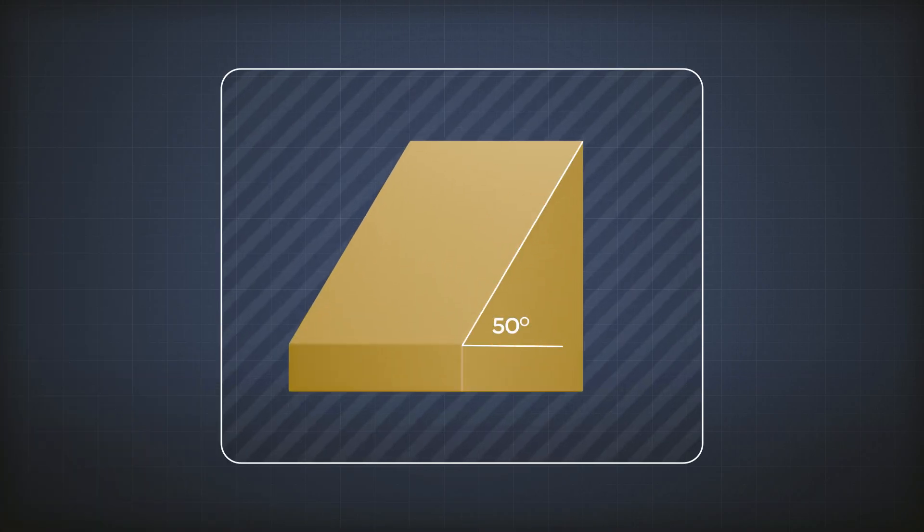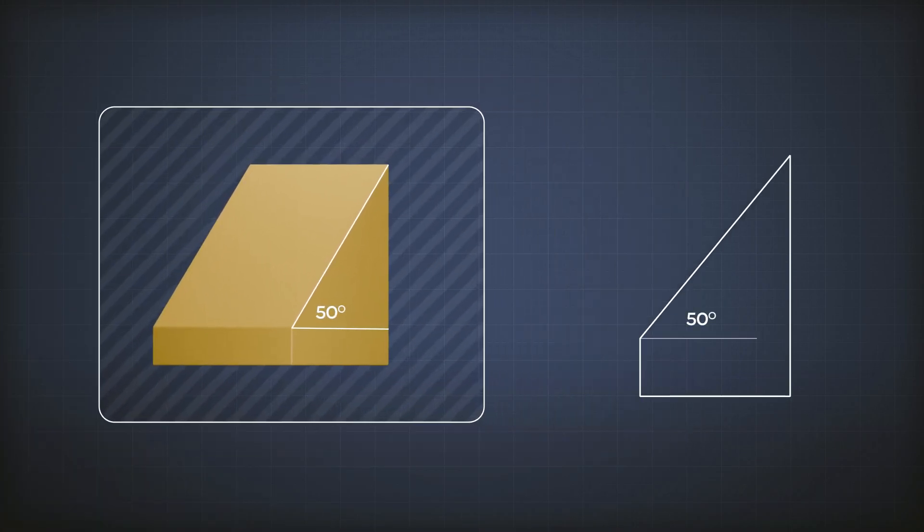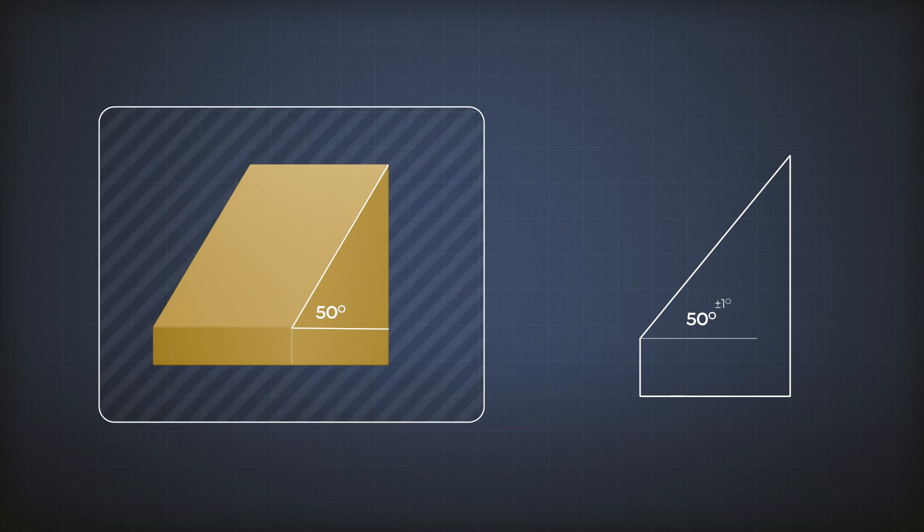Here's a part, and this angle is 50 degrees. And I want to tolerate it. I can use plus minus, let's say, 1 degree. But I could have done the same thing in perpendicularity. I could say 90 degrees plus minus 1 degree or something like that.